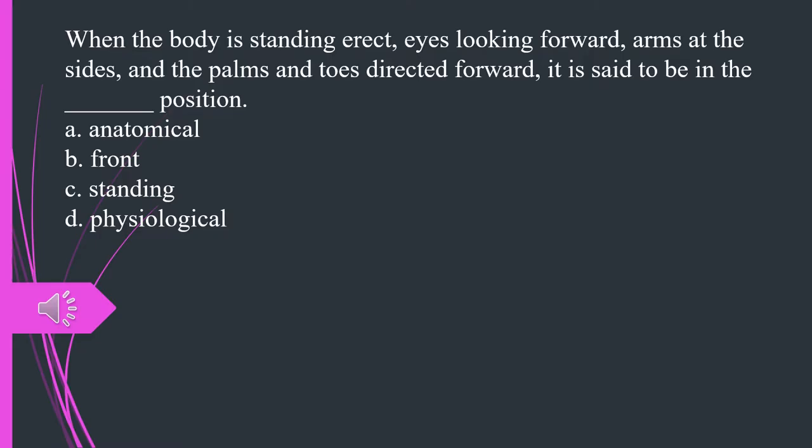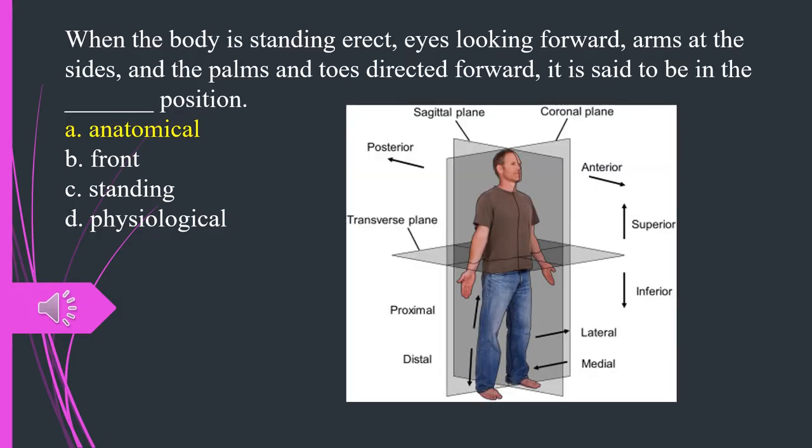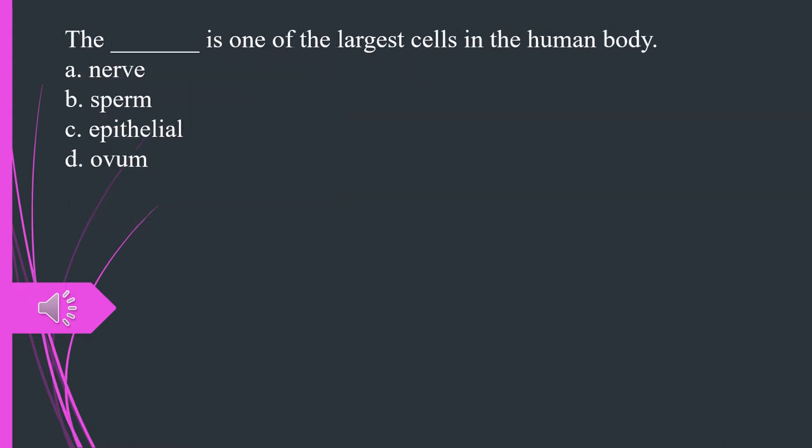When the body is standing erect, eyes looking forward, arms at the sides, and the palms and toes directed forward, it is said to be in the what position? A. Anatomical. B. Front. C. Standing. D. Physiological. The answer is A. Anatomical.